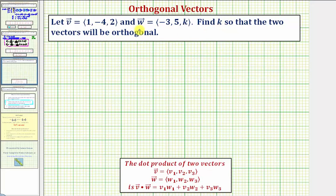If the two vectors are orthogonal, then v · w must equal zero. Let's set up our dot product. Because we want the vectors to be orthogonal, this must equal zero.